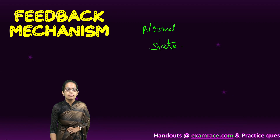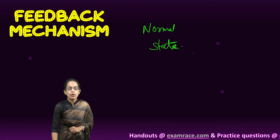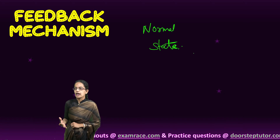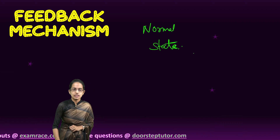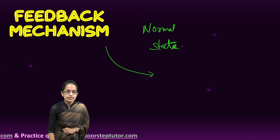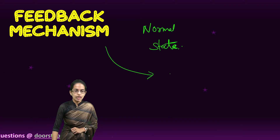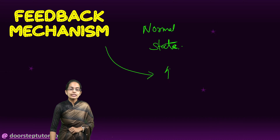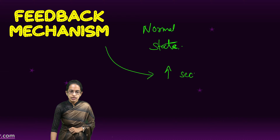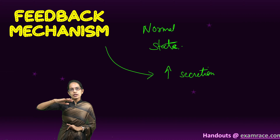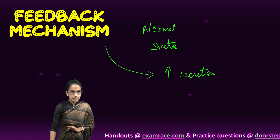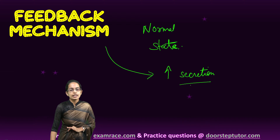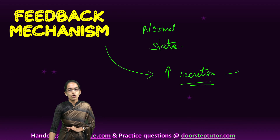Sometimes our body realizes that there is a need for increase in secretions. So what would happen? A signal would go to the respective gland to increase the secretions. Once the secretion increases, the levels that had fallen below in the blood would increase and we would attain a normal position.